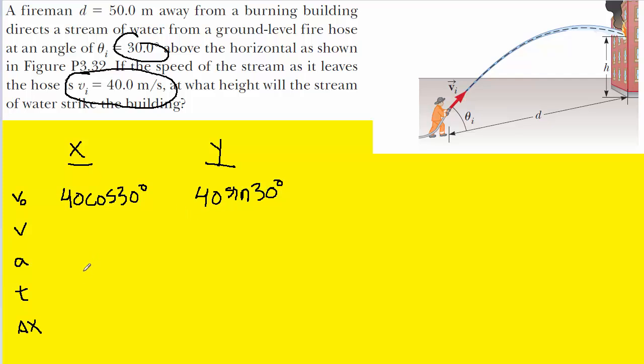It's next useful to turn to the acceleration. In projectile motion questions, unless otherwise specified, the acceleration in the x direction is 0 meters per second squared. The acceleration in the y direction under the influence of gravity is negative 9.8 meters per second squared.